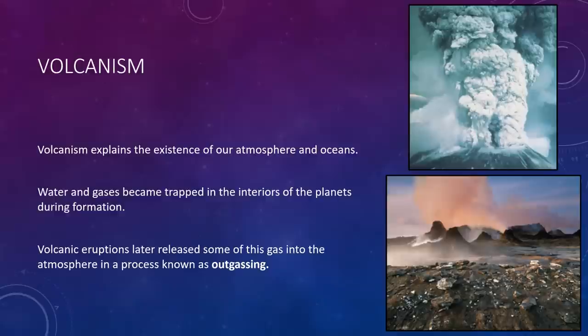Volcanic eruptions later released some of this gas into the atmosphere in a process known as outgassing. Outgassing can range from dramatic, as during a volcanic eruption like you see at the top right, to more gradual, as when gas escapes from volcanic vents like you see in the bottom right. The same type of outgassing also occurred on the other terrestrial worlds. Virtually all of the gas that made the atmospheres of Venus, Earth, and Mars, and the water vapor that rained down to form Earth's oceans, originally was released from the planetary interiors via outgassing.